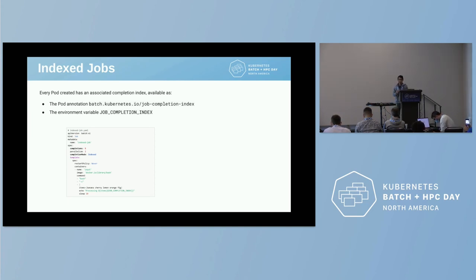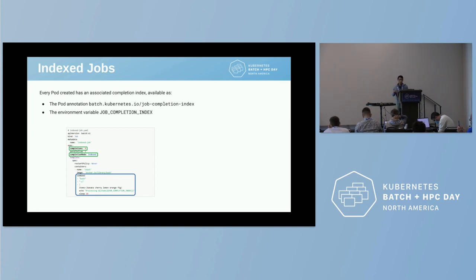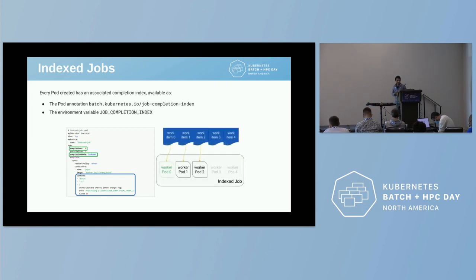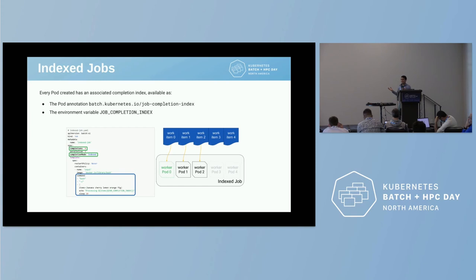How do you set up an indexed job? You just set the completion mode to indexed and set the number of completions — the number of pods you want to run. Then in your pod, in your workload, you just access the environment variable and execute your application. This is such a fundamental feature that it hadn't existed since the start of Kubernetes, and a couple of years back we finally added it.